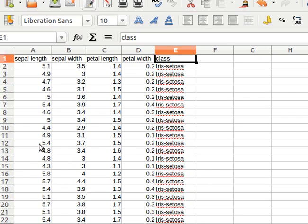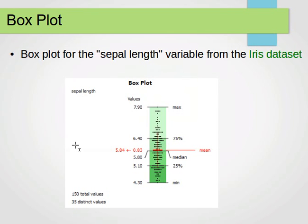Remember, we have 150 instances. Here, as you can see, we have 150 total values, we have 35 distinct values, so we just try to find distinct values, values which are repeated.